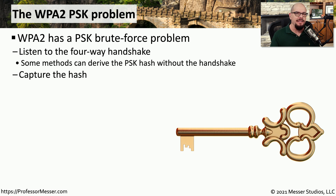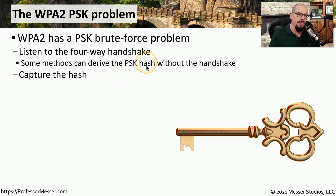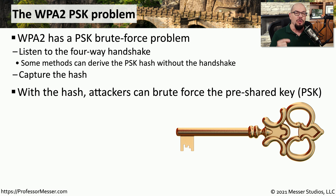To date, we have not had any significant cryptographic vulnerabilities associated with WPA2. However, there are some shortcomings with WPA2 that could allow someone to perform a brute force attack on a hashed password. There's a handshake method that occurs between the client and the access point when connecting to a WPA2 network. If you're using a pre-shared key, there are ways to derive the hash sent across the network. With the hash alone you can't gain access, but if you perform a brute force, you could eventually determine the pre-shared key.